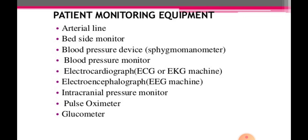Patient monitoring equipment includes arterial line, bedside monitor, blood pressure device, blood pressure monitor, ECG that is electrocardiograph machine, electroencephalograph that is EEG machine, intracranial pressure monitor, pulse oximeter, and glucometer.